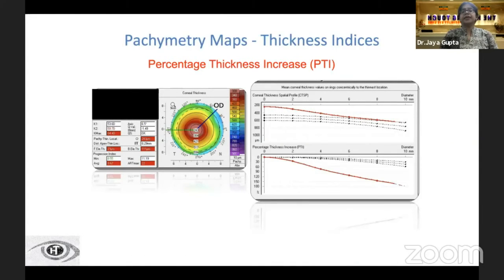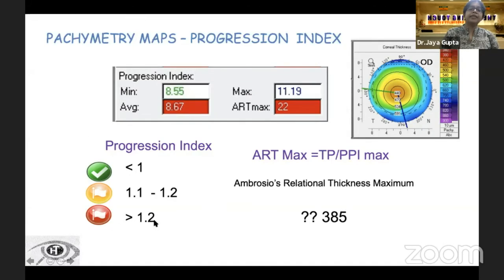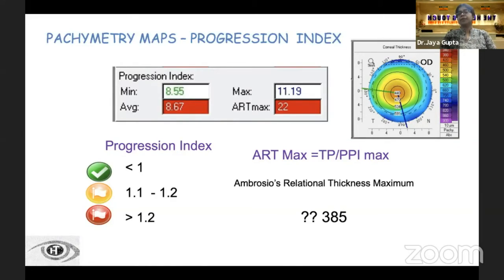The percentage thickness increase measures the percentage pachymetry increase starting from the thinnest point over concentric hemi-meridia throughout 360 degrees. The pachymetry progression index is calculated for all hemi-meridia over the entire 360 degrees starting from the thinnest point, giving a minimum and maximum value. This value should be less than 1; anything beyond 1.2 is a red flag. The ART max — Ambrósio relational thickness maximum — is the ratio between the thinnest pachymetry and the pachymetry progression index. The normative value is 3.85; anything less than this is suspect.